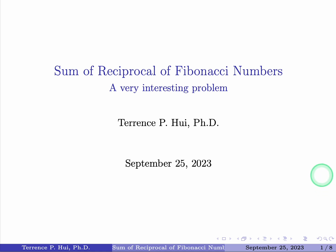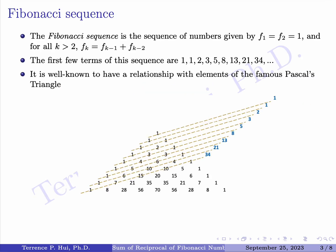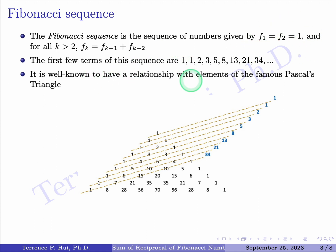Hi, this is Terry again sharing another interesting problem: the sum of reciprocals of Fibonacci numbers. The Fibonacci numbers are members of a sequence generated as follows: you start with F₁ = 1 and F₂ = 1, and from k = 3 onward, F_k = F_{k-1} + F_{k-2}. The first few terms are 1, 1, 2, 3, 5, 8, and so on.